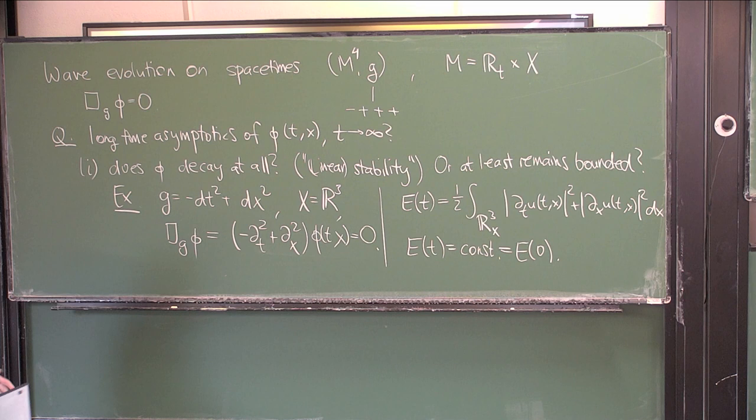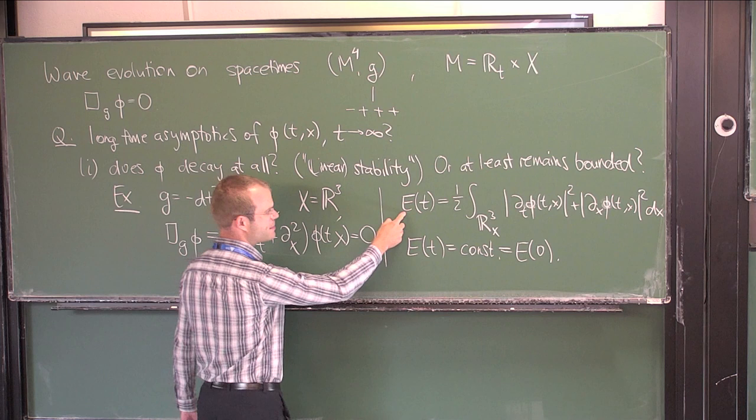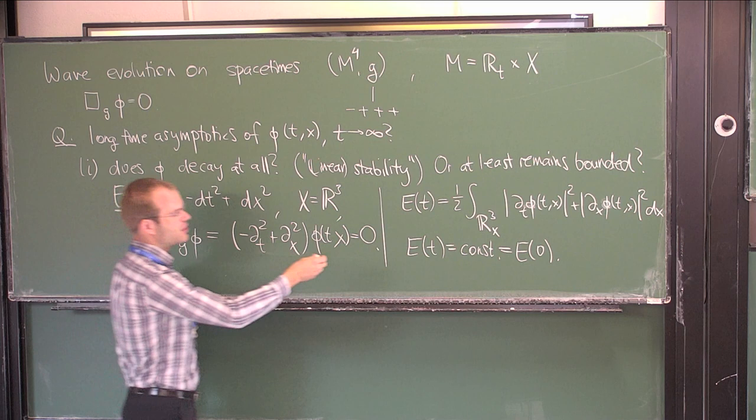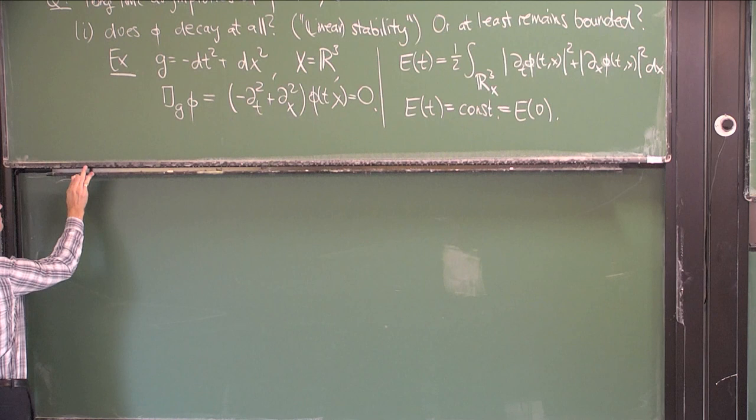You just differentiate this and integrate by parts in space once, and then you find that the derivative of the energy is zero. So here you have, roughly speaking, a positive answer: yes, the solution remains bounded in some sense, because of the existence of this conserved energy.